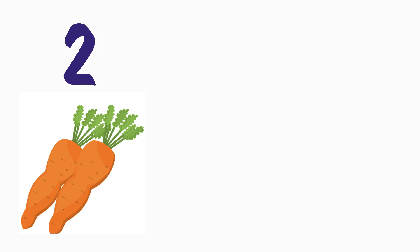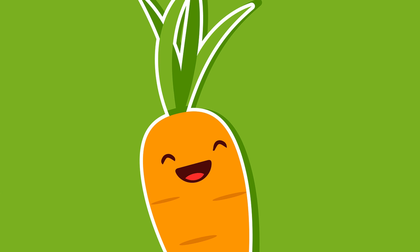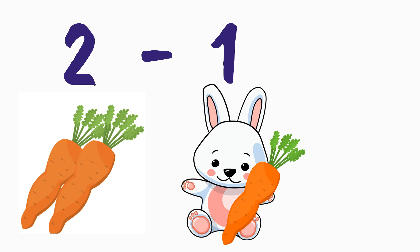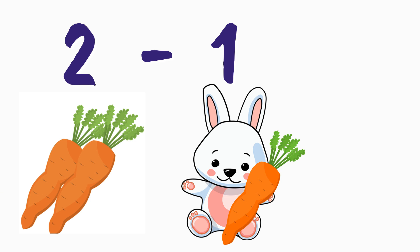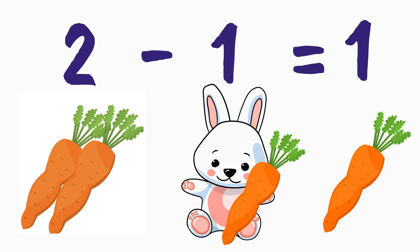Let's say you have two carrots — carrots are absolutely amazing — and you give one carrot to a bunny for her birthday. We'll need to subtract one carrot from the two. What is two minus one? Yeah, one. You would have one carrot left. Two minus one equals one.